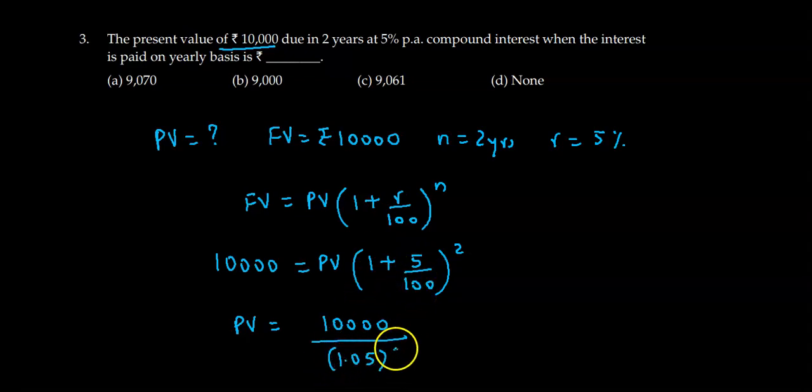1.05 square. 10,000 divided by 1.05 divided by 1.05, this comes to 9070.29. Approach 9070, so the correct answer is option A.